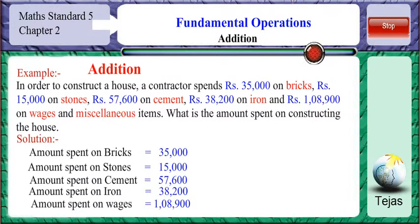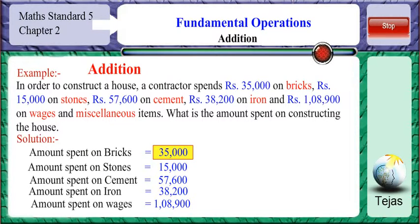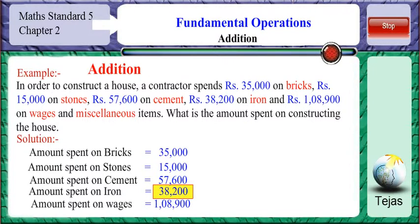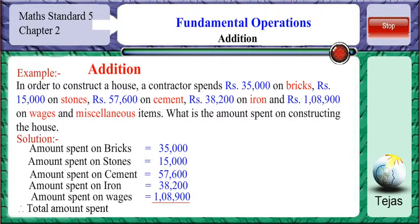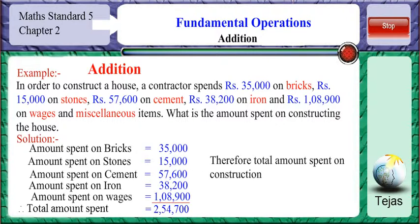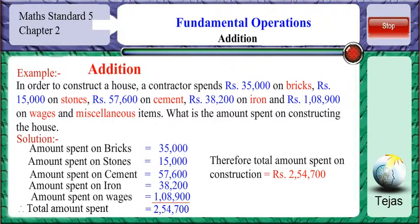The amount spent on constructing the house is the sum total of all these numbers: 35,000 plus 15,000 plus 57,600 plus 38,200 plus 1,08,900 rupees. The total of all these is equal to 2,54,700 rupees. So, the total amount spent on constructing the house is equal to 2,54,700 rupees.